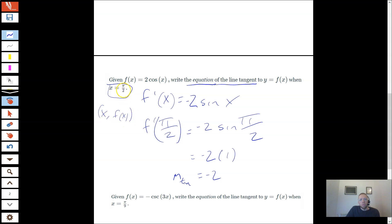Meaning my point is going to be π/2 comma whatever I get when I plug π/2 into cosine. Well, for my unit circle, cosine of π/2 is 0. So 2 times 0 is 0. So (π/2, 0) is my point.